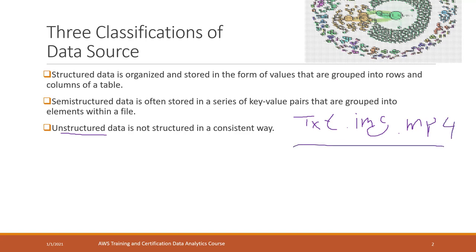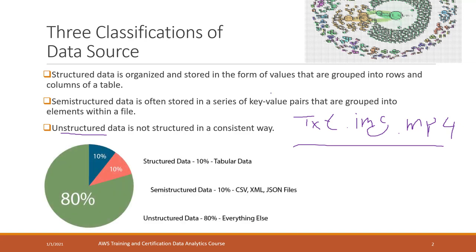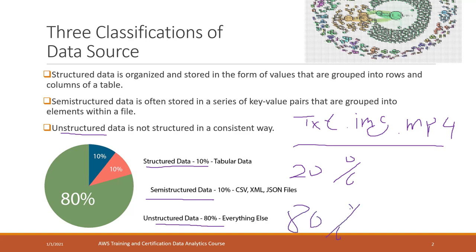In the real world, structured data and semi-structured data only account for about 20% of the total data, while the other 80% is unstructured. So it is actually very important to know how to handle unstructured data, because only a small portion of data is structured or semi-structured.